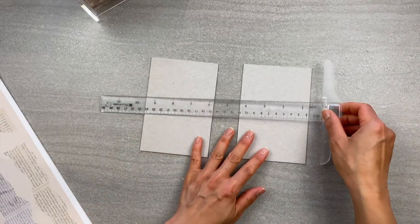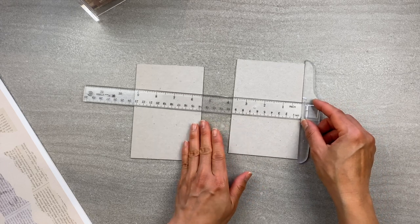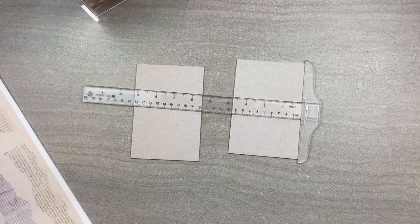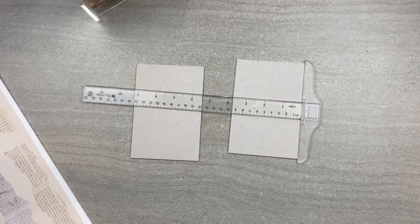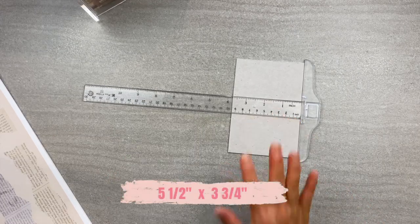The first thing you want to do is cut two pieces of chipboard which will be the base for your mini journal, and then you cut these at five and a half by three and three quarters of an inch.